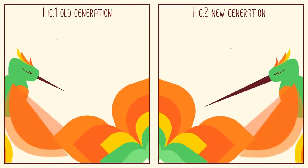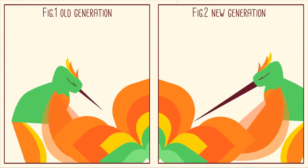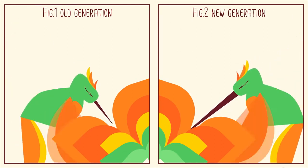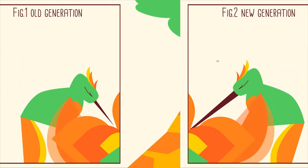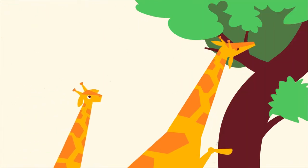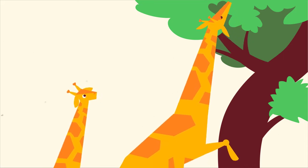Lamarck also thought that these changes caused by the animal's struggle to survive were passed on to the next generation which then continued the evolutionary process. In other words, a new baby giraffe would have a longer neck as a result of its parents stretching for their food.